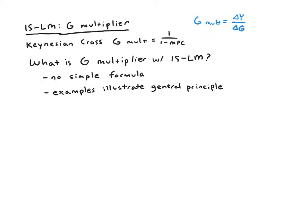We will still have this notion of a G multiplier in the IS-LM model. We'll be able to calculate it based on the formula delta Y over delta G. But there won't be a simple formula, and it'll turn out to usually be smaller than the Keynesian cross G multiplier would predict.